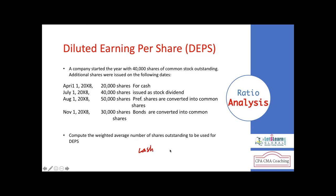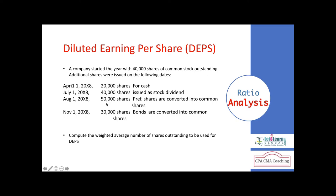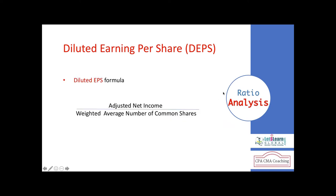Converting all these shares, the weighted average number of common shares outstanding — the denominator in our DEPS calculation — comes to 175,000. For the numerator (adjusted net income), when bonds are converted to common shares there is no longer any interest expense. We use the formula: Adjusted Net Income = Net Income + Interest × (1 − Tax Rate).